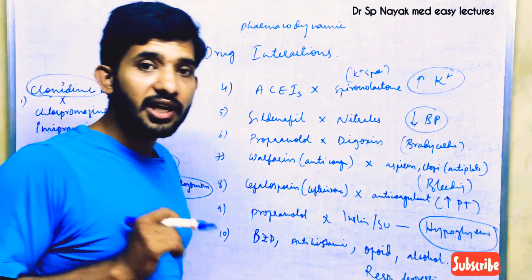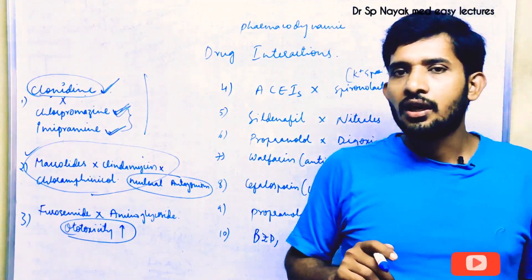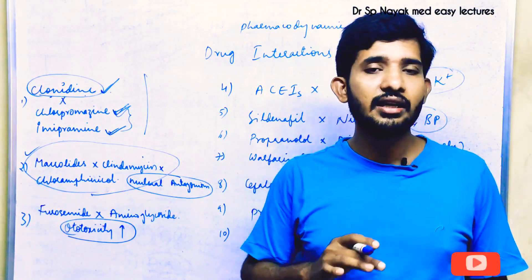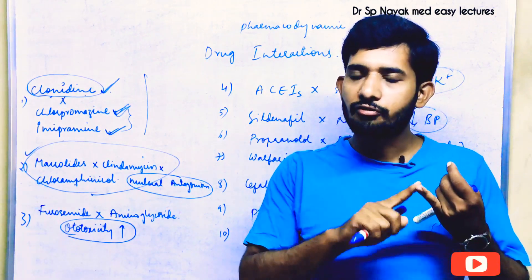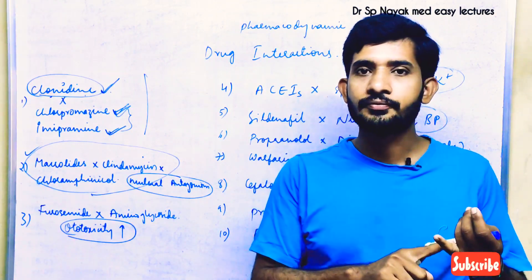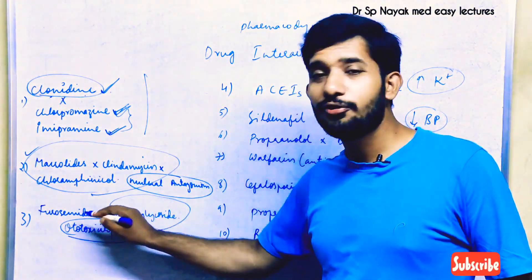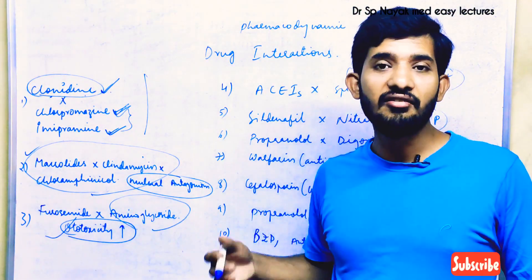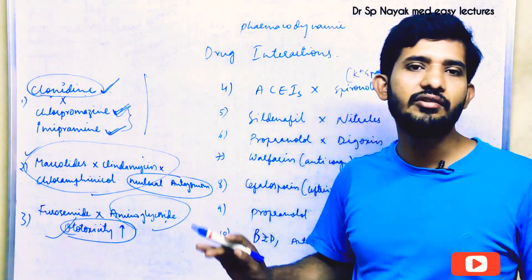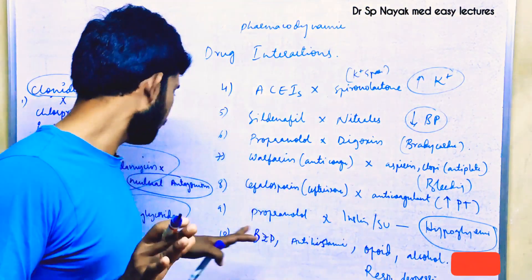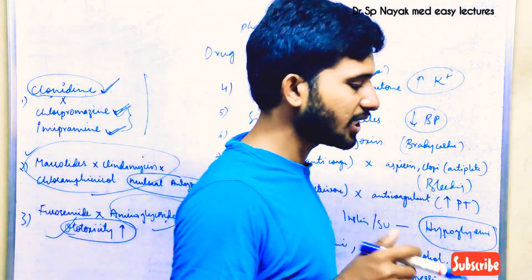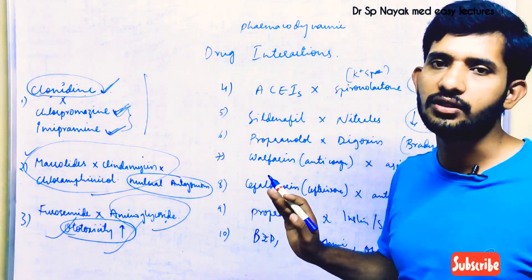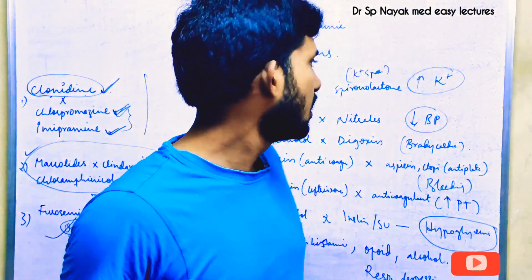The next interaction is furosemide and aminoglycosides. Aminoglycosides are highly nephrotoxic, ototoxic, and neurotoxic drugs. Furosemide is also an ototoxic drug. So when furosemide and aminoglycoside are given in combination, ototoxicity is aggravated, leading to hearing impairment. Never combine furosemide with aminoglycosides.